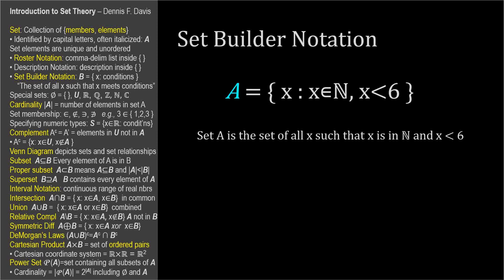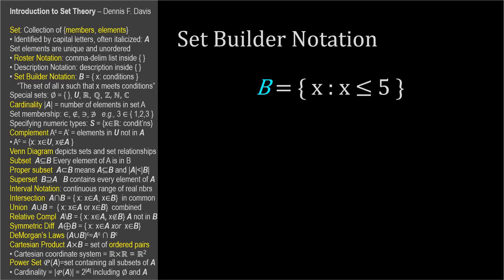The colon stands for 'such that.' The algebraic expression after the colon must be true about X for X to be in the set. In place of the colon, a vertical bar can be used — it means the same thing, 'such that.' If there are multiple characteristics, all of which must be true, they can be separated with commas, which denote the word 'and.' In this example, each element of set A must be a natural number and be less than 6. Consider this set: B equals the set of all X such that X is less than or equal to 5. You might think B is the set of 1, 2, 3, 4, and 5 if X were a natural number.